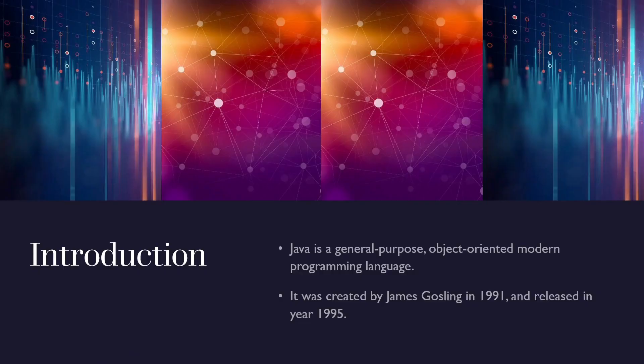Java is a general-purpose, object-oriented, modern programming language. General-purpose means it can be used to achieve any objective — whether you want to develop web applications, microservices, Android applications, Internet of Things, or artificial intelligence. Everything can be achieved with Java.